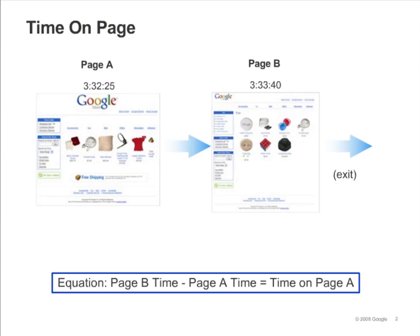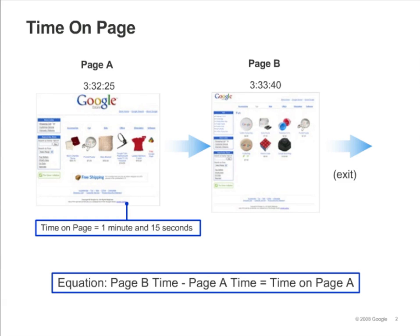To calculate time on page, Google Analytics compares the timestamps of the visited pages. For example, in the slide the visitor saw page A, then page B, and then left the site. The time on page for page A is calculated by subtracting the page A timestamp from the page B timestamp. So the time on page for page A is 1 minute and 15 seconds.